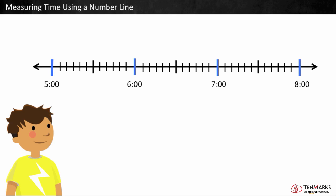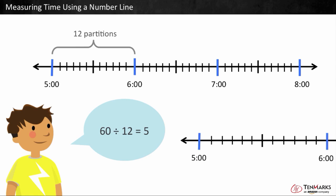Based on this number line, every large tick mark represents the hour. There are 12 pieces or partitions between 5 o'clock and 6 o'clock. Between 5 o'clock and 6 o'clock, there are 60 minutes. Divide 60 minutes by the number of equal pieces or partitions to find how many minutes each tick mark represents. 60 divided by 12 is equal to 5. So, each small tick mark is 5 minutes.